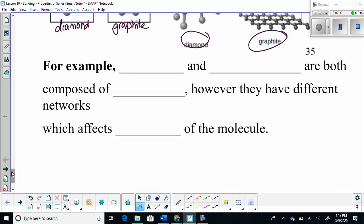So for example, diamond and graphite, which is your pencil lead. These networks are both composed of carbon. They're both made out of carbon. However, they have different networks. Those networks affect the strength of the molecule.